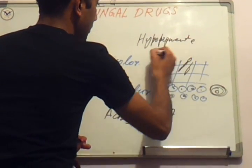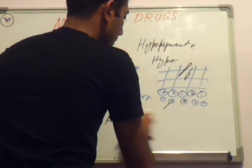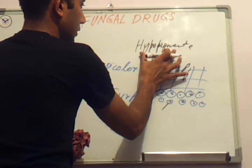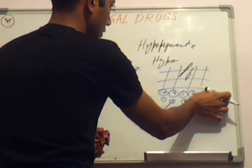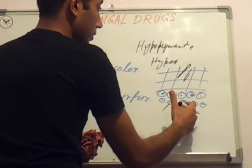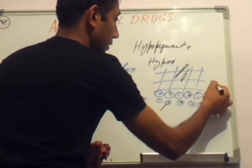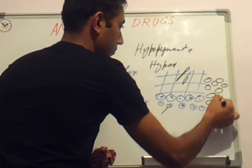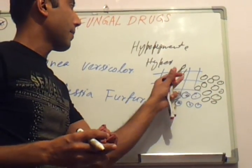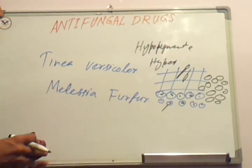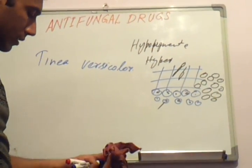Due to destruction of melanocytes, the skin becomes white in that area — causing hypopigmented patches. However, the body compensates by producing new melanocytes, which may produce a large amount of melanin, causing hyperpigmented patches. So both hypopigmented and hyperpigmented patches can occur in tinea versicolor.